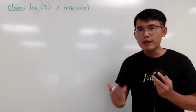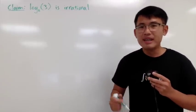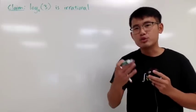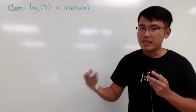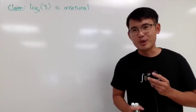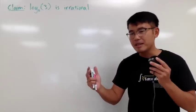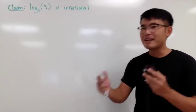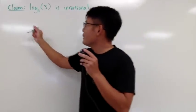So I'm trying to show log base 2 of 3 is not rational. And in this case, I will try to do it by contradiction. Another famous example is that you can try to prove there are infinitely many primes by using contradiction as well, because infinitely many means not finite amount.